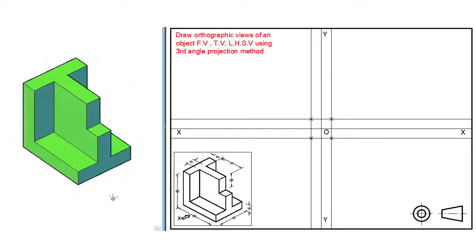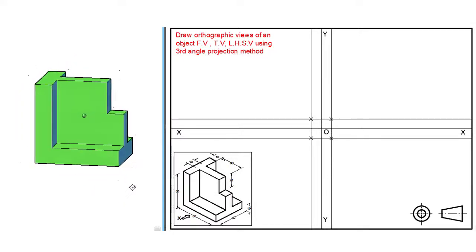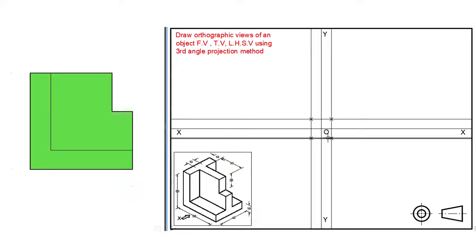Now to draw a front view, let us observe the front view of the given 3D object with respect to direction of view. For drawing a front view, our reference point is located at the top left corner. So let us find out that point in our 3D object — so that is the point.